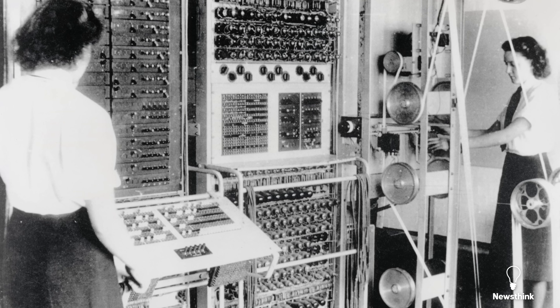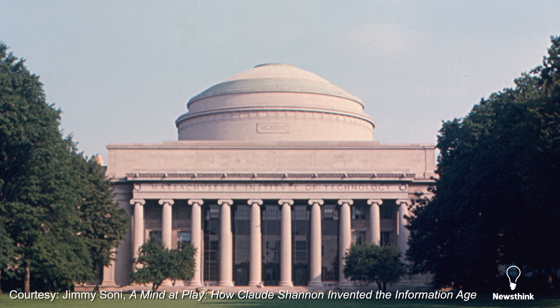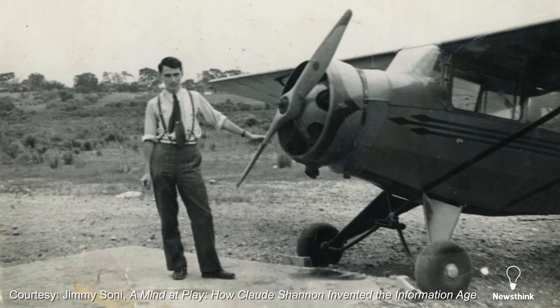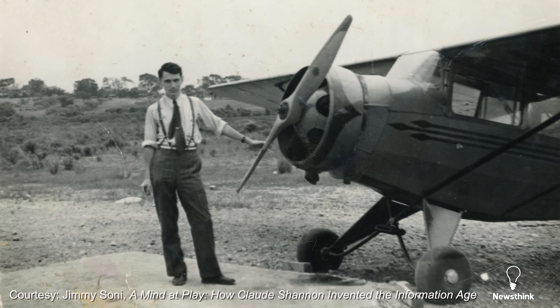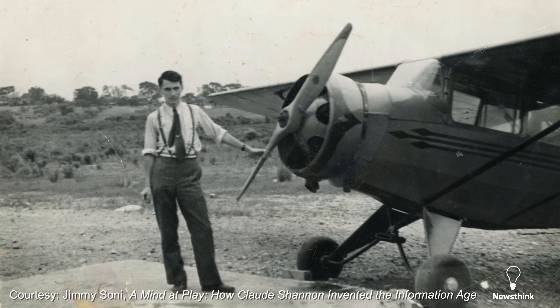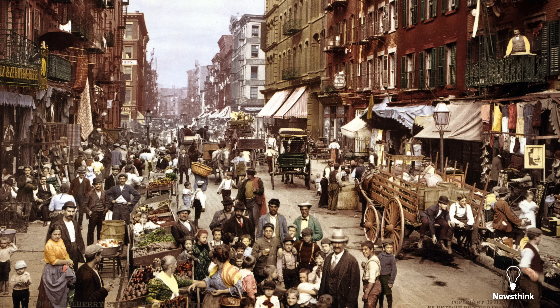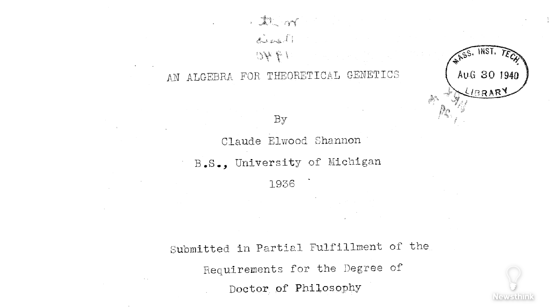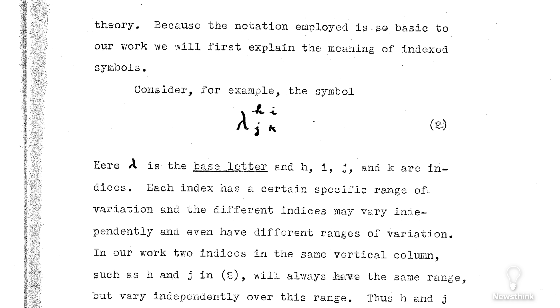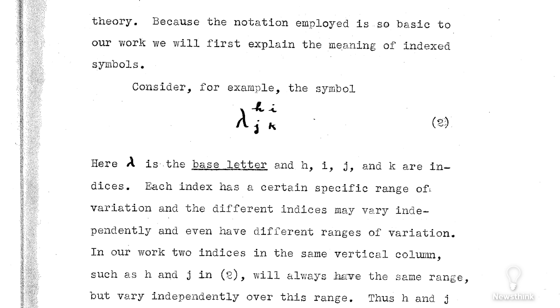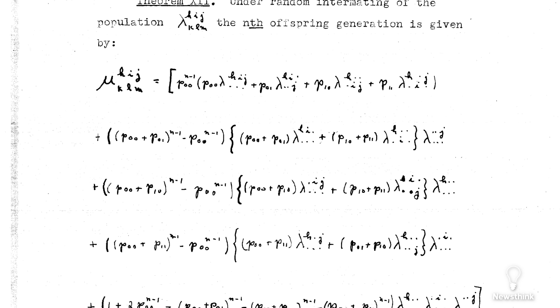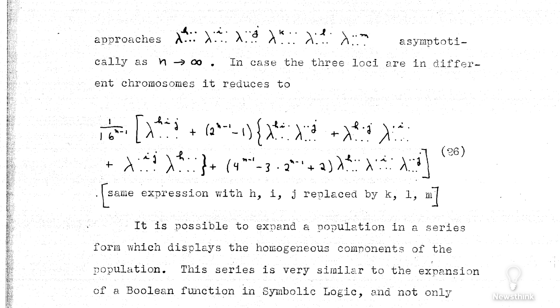Shannon's work changed that forever. At MIT, word quickly spread about the young man from Michigan. His flight instructor refused to teach him to fly propeller planes, not wanting to risk losing a brain like his — but MIT's president overruled the decision. Shannon's brilliance extended beyond circuits. Vannevar Bush encouraged him to explore population genetics for his PhD thesis, which uses math to predict how genes are passed down through generations. Despite having no background in genetics, he quickly mastered the field, even developing a formula to predict how frequently any three alleles would appear in a population over time.